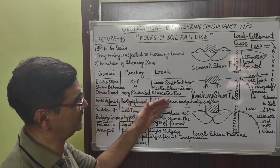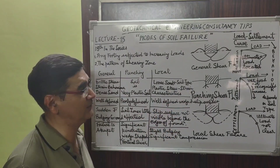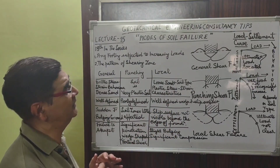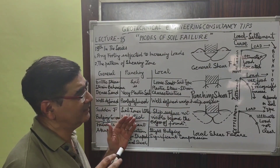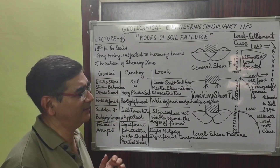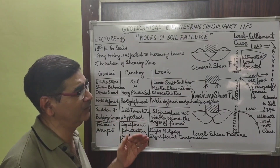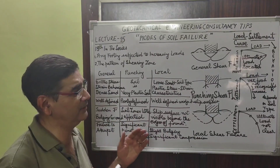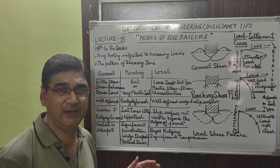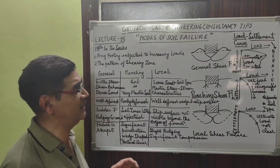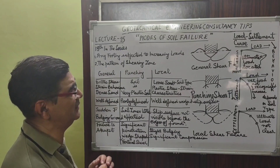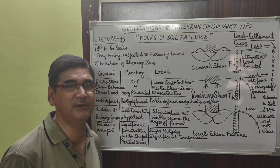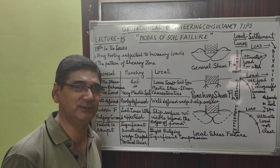Friends, I think this comparative analysis of the three different kinds of soil failures — general shear, punching shear, and local shear failure — has been clarified. I hope you all understand this lecture. Thank you for your support, keep on subscribing to my channel.